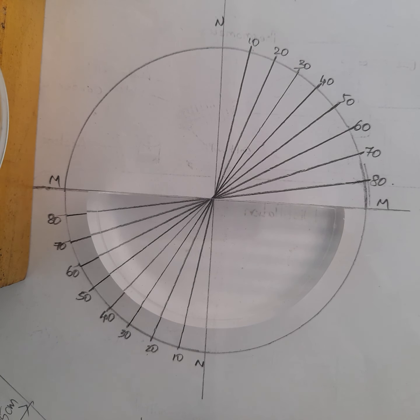We place the semi-circular glass disc so that its diameter coincides with the interface line, which is M-M.